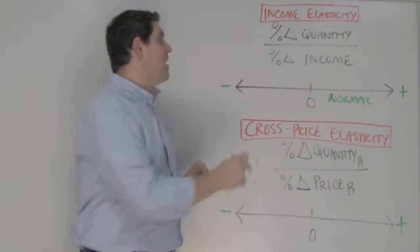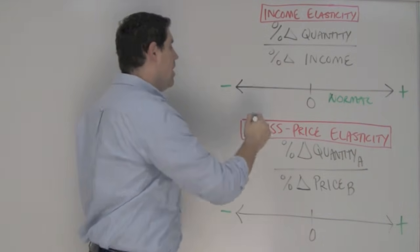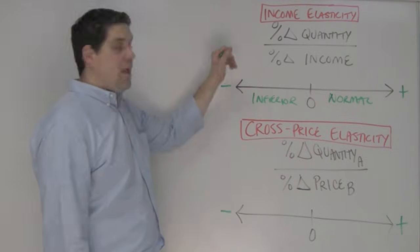What happens if this number is negative? If the income goes up, but people buy less of that product. Or if the income goes down, people buy more of it. Well, that's an inferior good. Now, take that and apply it here.